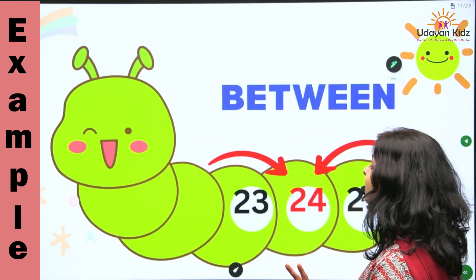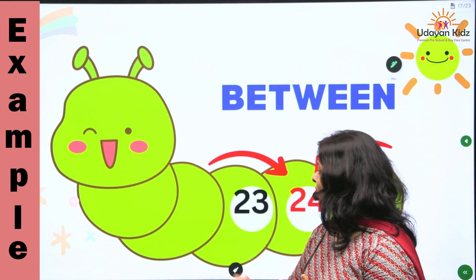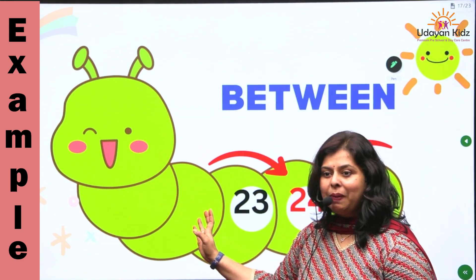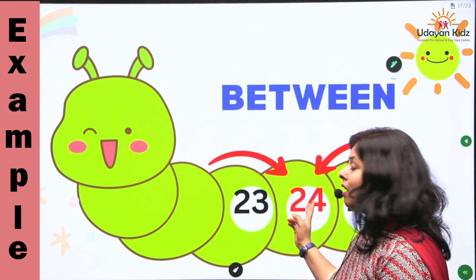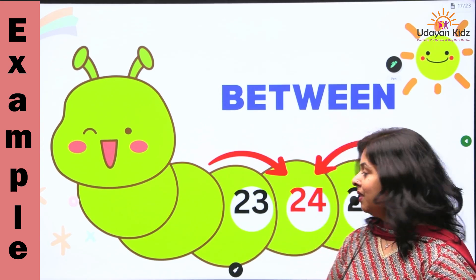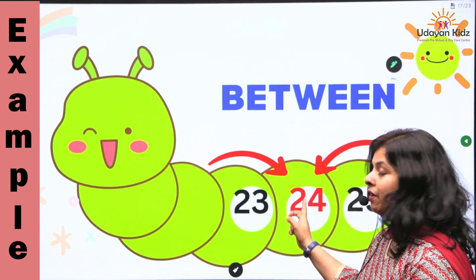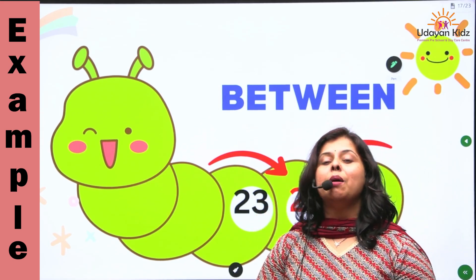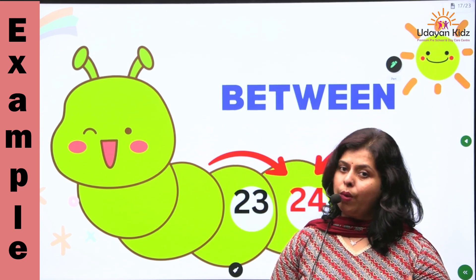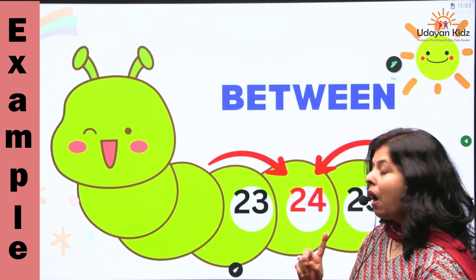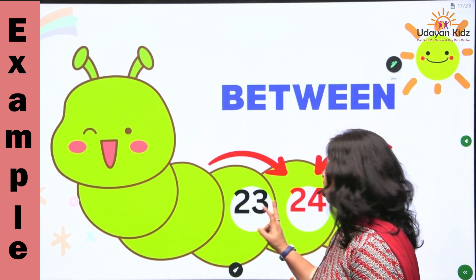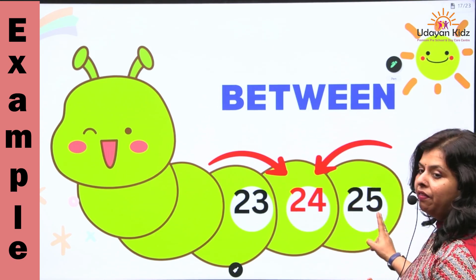Next, oh, what is this? This is a caterpillar. And where does number 24 come? Number 24 comes between number 23 and number 25. Let's count it: 23, 24, 25.